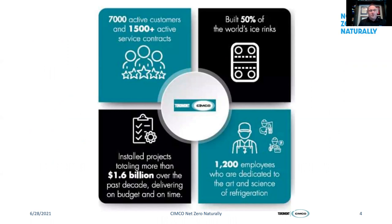We're very proud that we have built over 50% of the world's ice rinks. Our installed projects total more than $1.6 billion within the past decade, delivering them on budget and on time. This comes very much into play with our relationship with Canoe. We have 12,000 employees who are dedicated to the art and science of refrigeration.